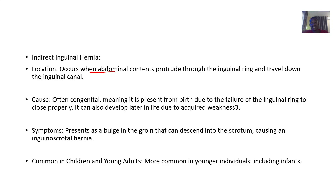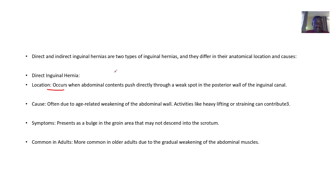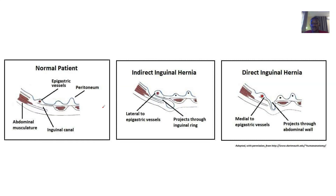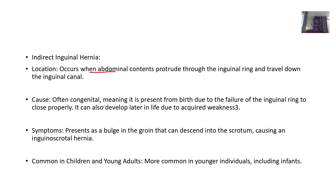The causes of direct inguinal hernia can be due to age-related weakening of the abdominal wall, and also activities like heavy weight lifting and straining. Indirect inguinal hernia is often congenital — someone is born with the condition — but can also develop later in life due to weakness around that area.